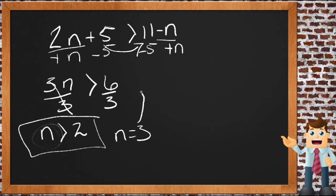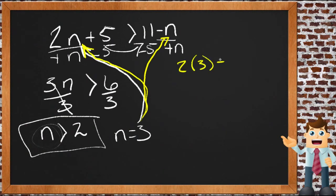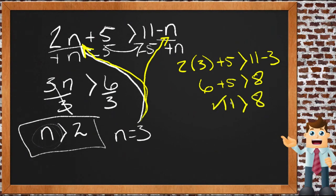We'll plug that 3 in for n up in our original equation up here. Let me change colors so it's easier to track here, and then up in our original equation over here. So let's see what happens when we do that. Then we get 2 times 3 plus 5 is greater than 11 minus 3. Well 2 times 3 is 6 and 6 plus 5 is supposed to be greater than 11 minus 3 which is 8. Well 6 plus 5 is 11. 11 is definitely greater than 8. So that checks.